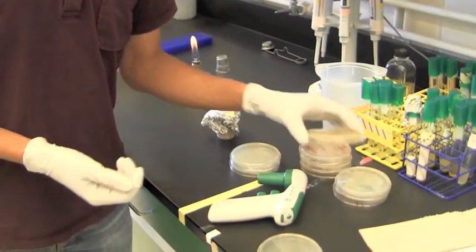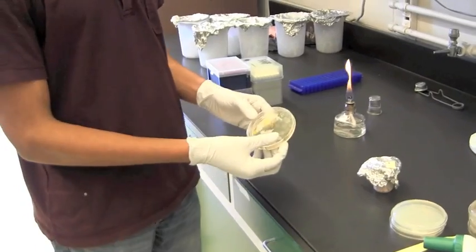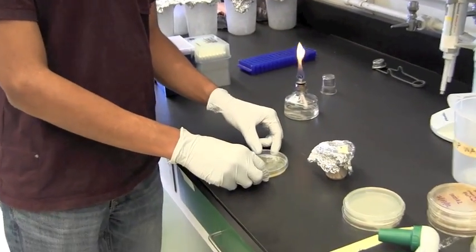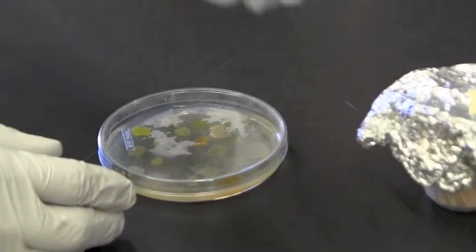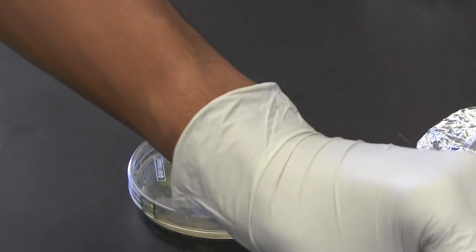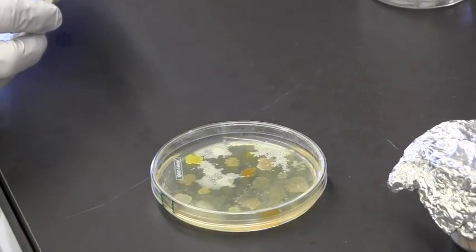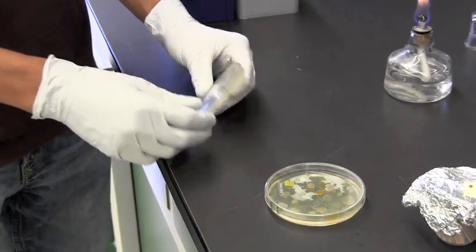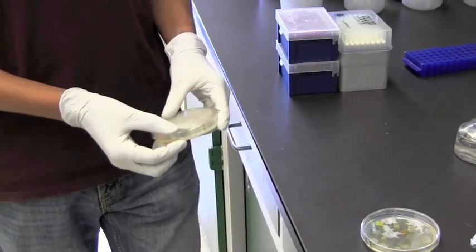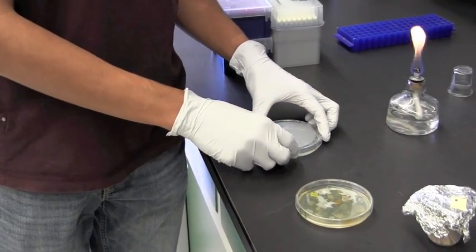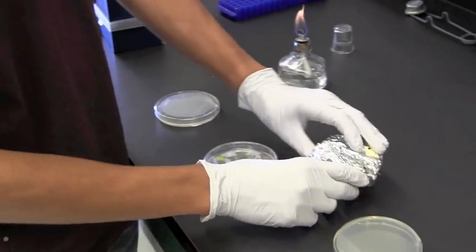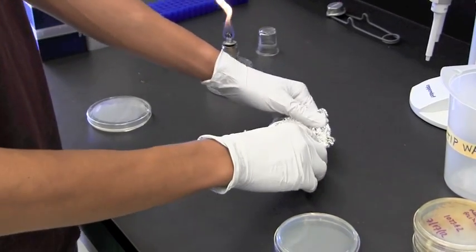So what we're going to do is pick our bacteria from a master plate which contains all of our soil isolates or wherever you got your isolates from, and we're going to spread these out by picking with a toothpick onto a clean agar plate where these cells will grow overnight or over the next couple of days.